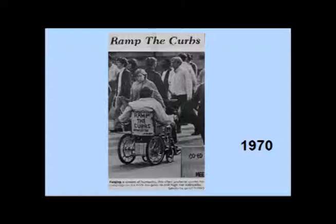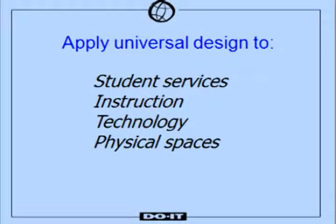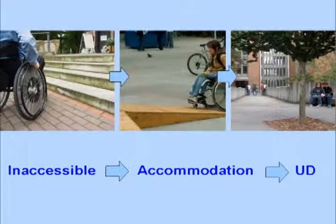And when we did ramp all those curbs, most of the people using those features are not people in wheelchairs — they're people with baby strollers, delivery carts, and others who benefit from a ramp rather than a curb. Universal design can be applied to just about anything. In education, it can be applied to student services, instruction, technology, and physical spaces.